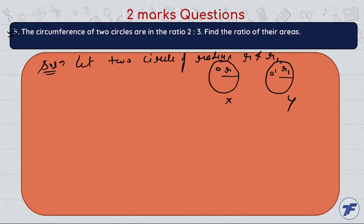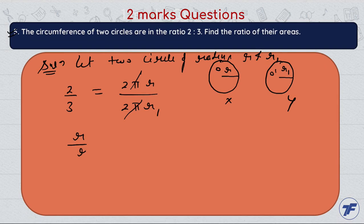The ratio of circumferences is given. The circumference of the first circle — the ratio of their circumferences is 2/3, equal to 2πr upon 2πr1. The 2π cancels out, so we get r upon r1 equal to 2 by 3.